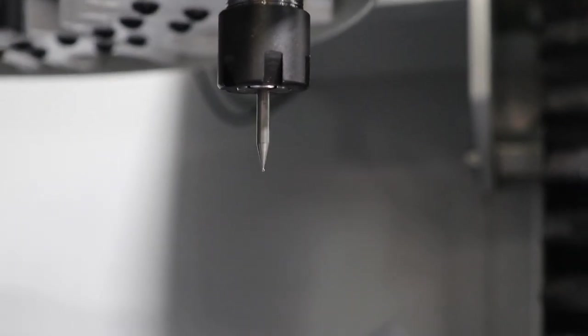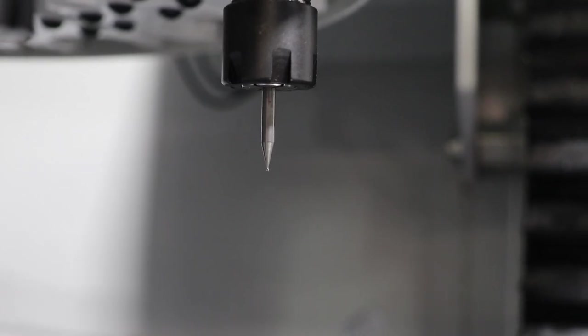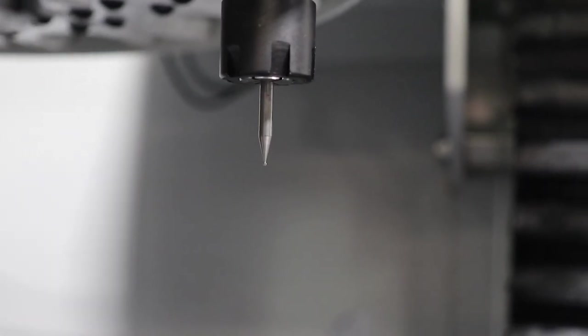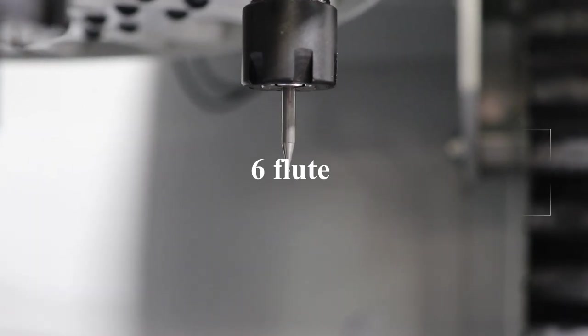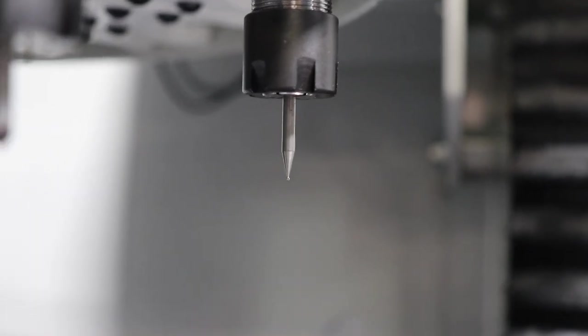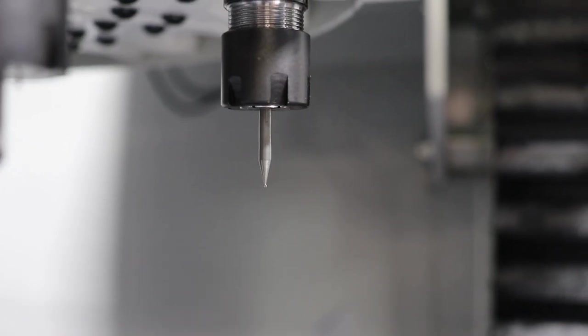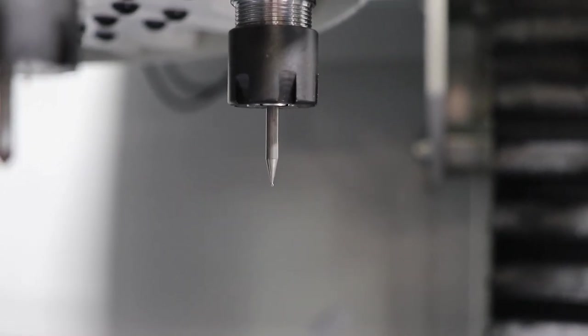This is the really interesting guy. This is the lollipop mill. It's about just under thirty thousandth diameter. It's a four flute. This is actually a high-speed steel cutting tool. Carbide wouldn't be better but this seems to work just fine.